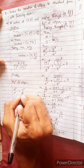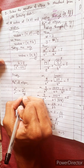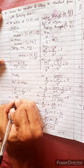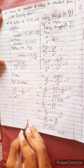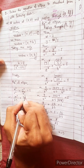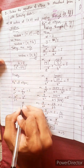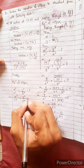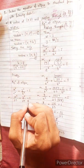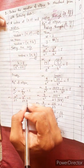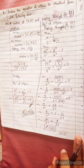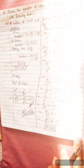Therefore the equation of the ellipse is x² / 25 + y² / 64 = 1. That's the answer — right answer, bye bye and thank you.